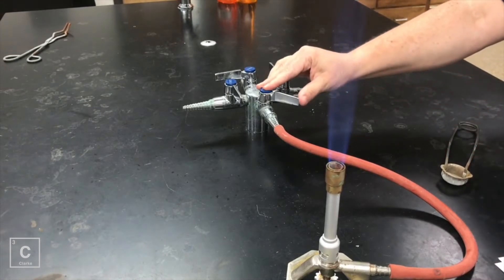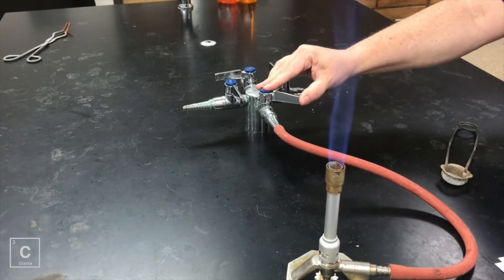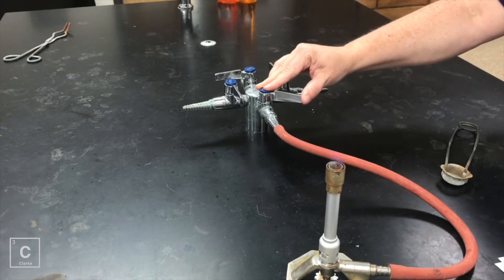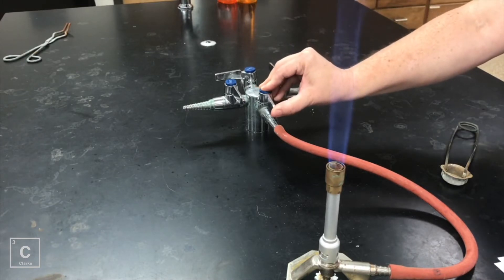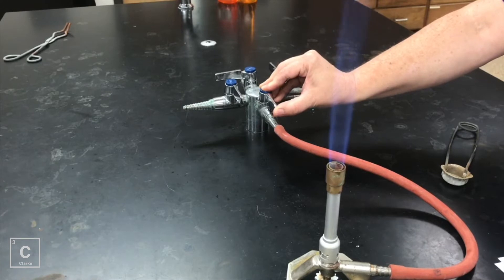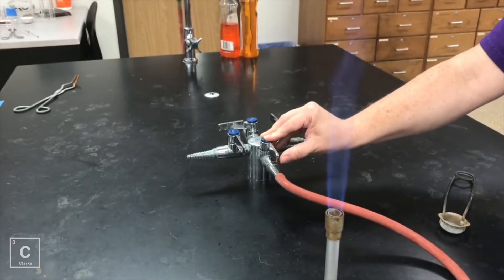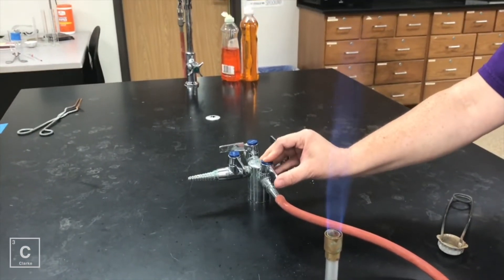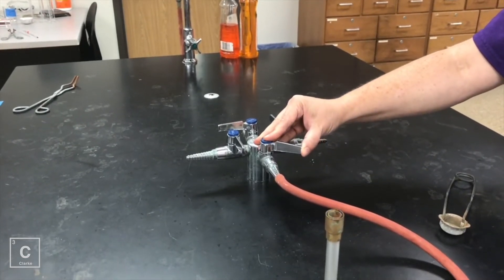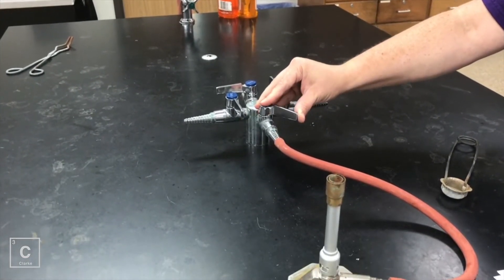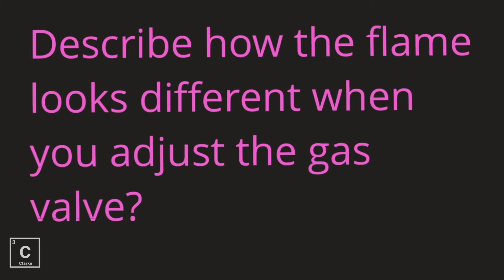I am going to adjust the gas valve. I am going to decrease it so it's only about 25 degree angle. And I am going to increase it so it's about a 90 degree angle. We can see that 90 degrees is the most gas entering the Bunsen burner while the 25 degrees is very little gas entering. Describe how the flame looks different when you adjust the gas valve.